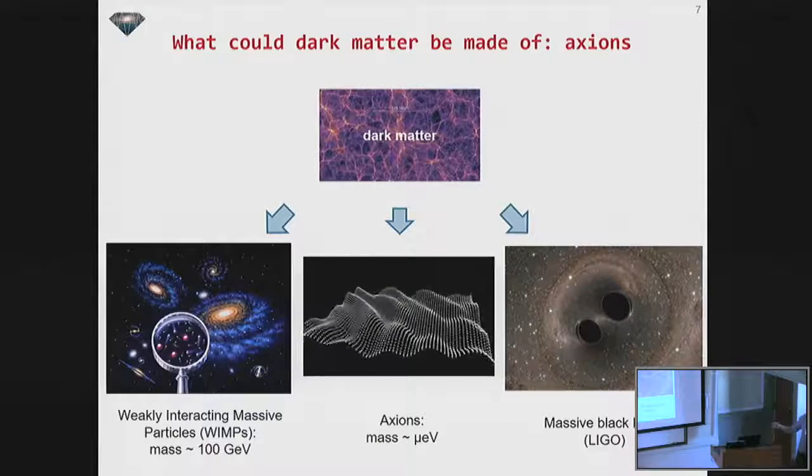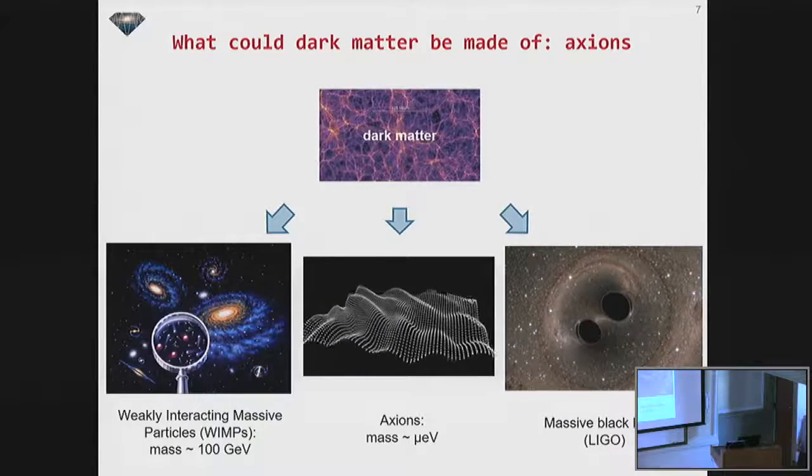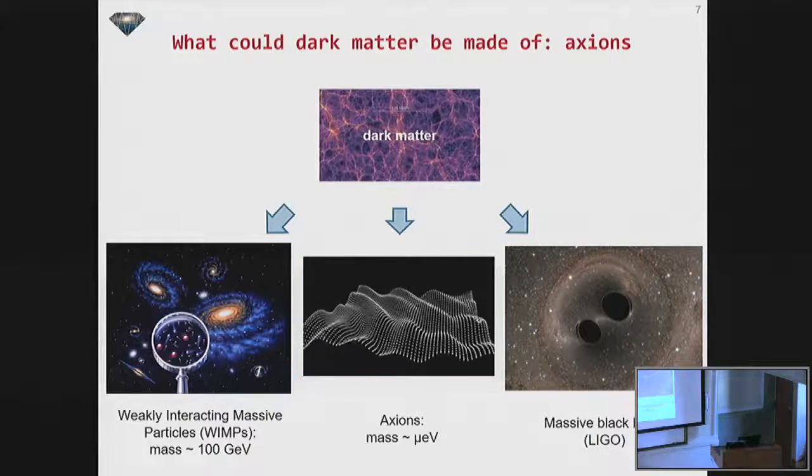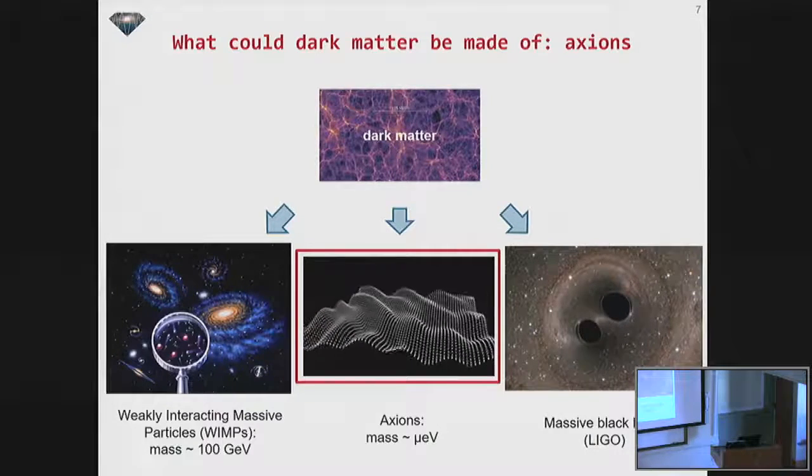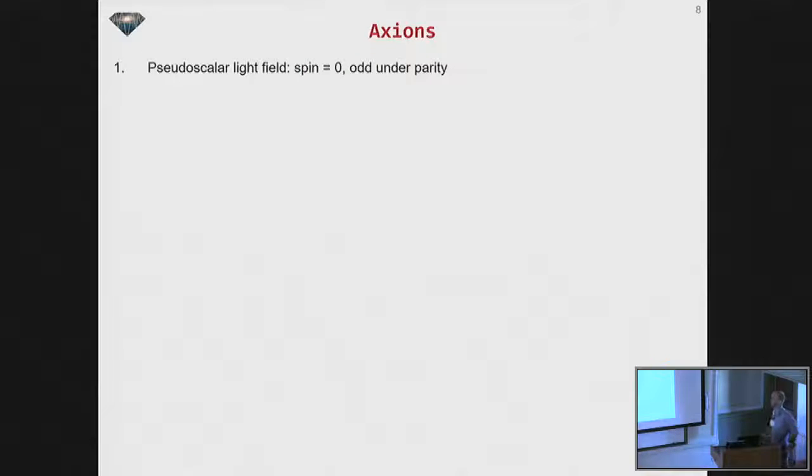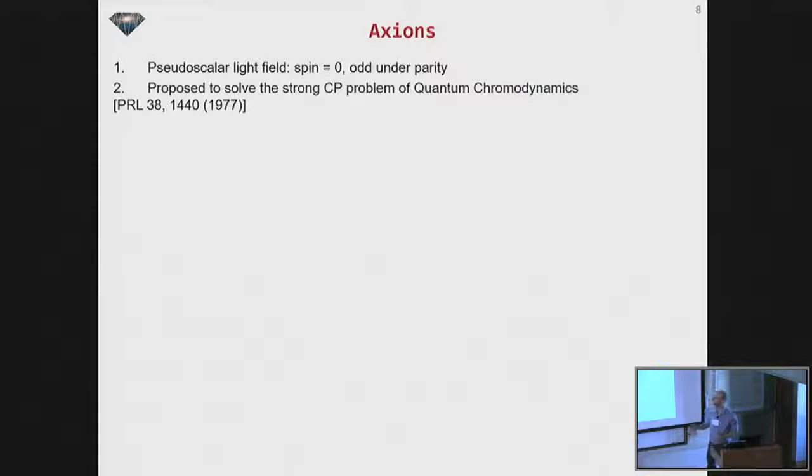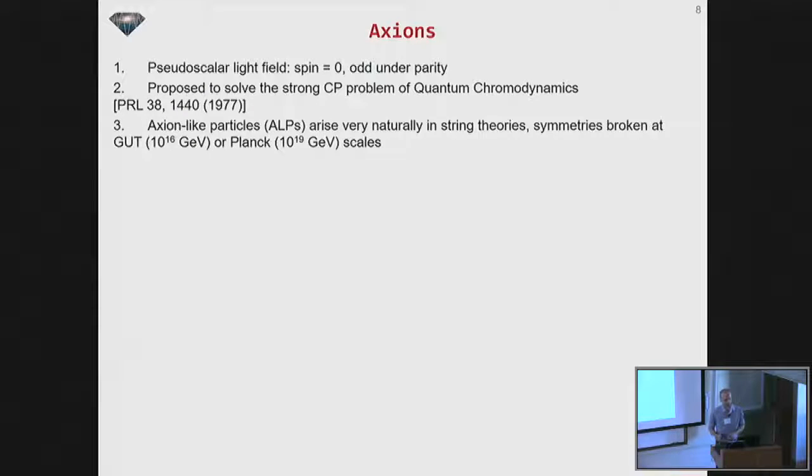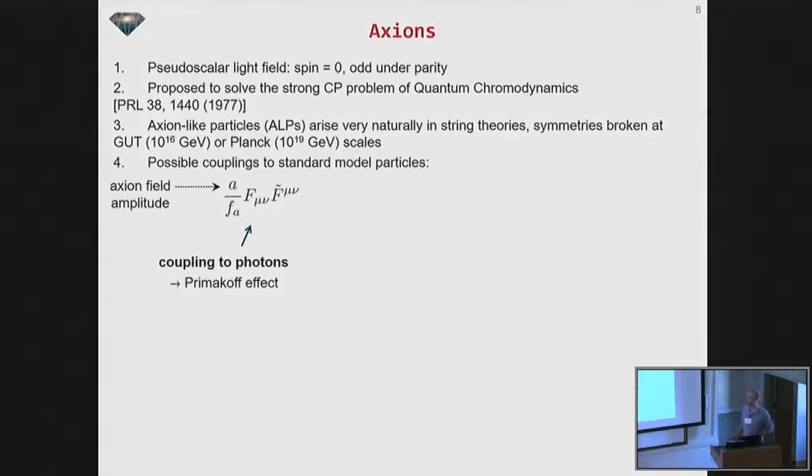So for the rest of the talk, I'm going to focus on this middle dark matter candidate, which is the Axion. And again, a few of the previous speakers have talked about the Axion. So very, very quick introduction. This is my version of the Axion slide. So it's a pseudoscalar light field. This was proposed in the 70s to solve the strong CP problem of quantum chromodynamics. And these kinds of particles arise very, very naturally in string theories, and other theories beyond the standard model.